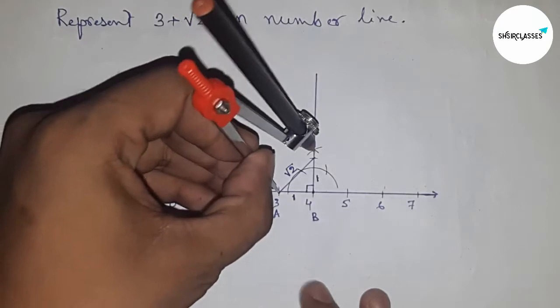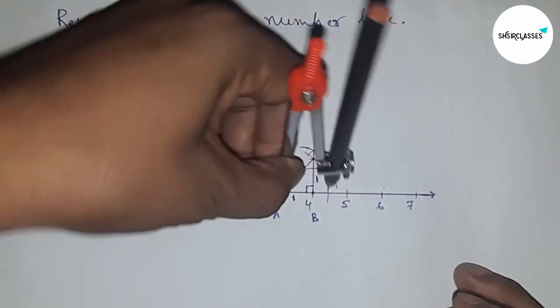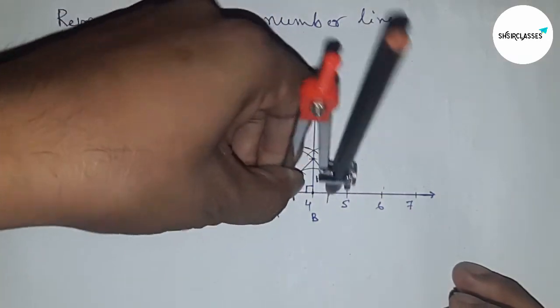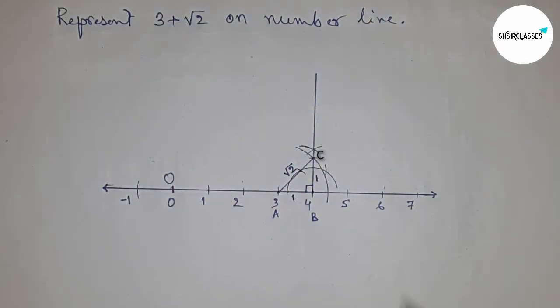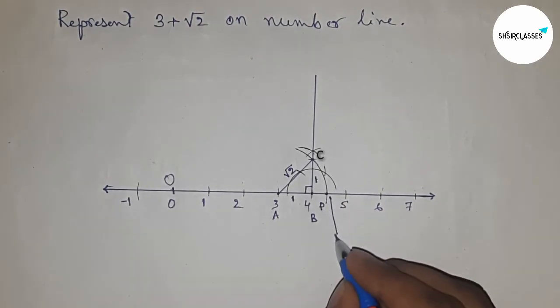Next, taking the length of the hypotenuse by compass and drawing an arc which cuts the number line at a point. This is the representation of 3 plus root 2.